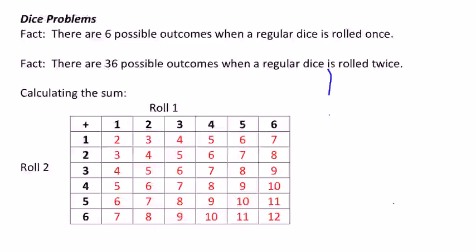If you roll a dice twice, there are actually 36 possible outcomes. For example, you could get a one with the first die and a one with the second, a one with the first and a two with the second, and so on. We calculate that by doing six times six, which is 36 outcomes.